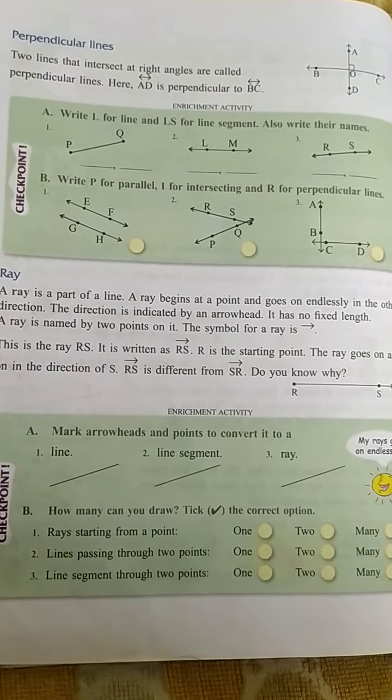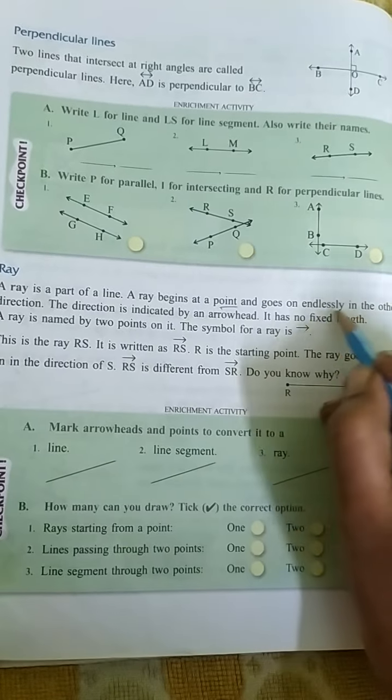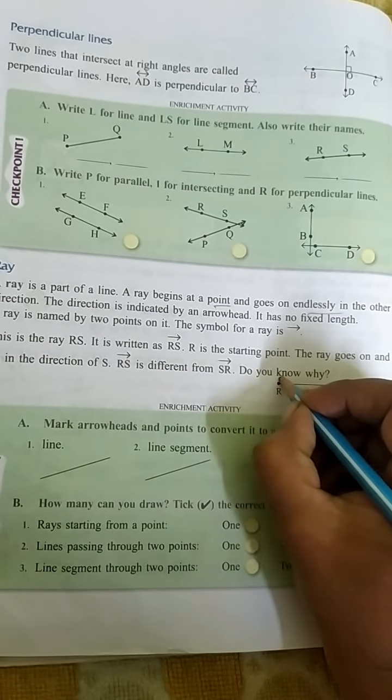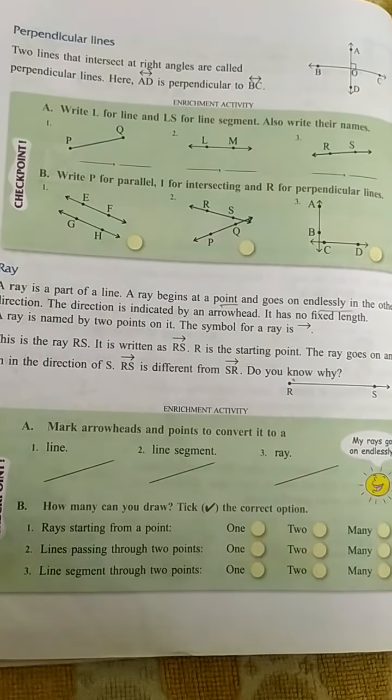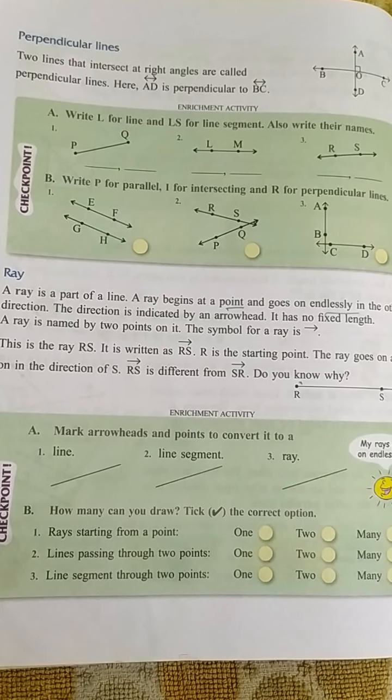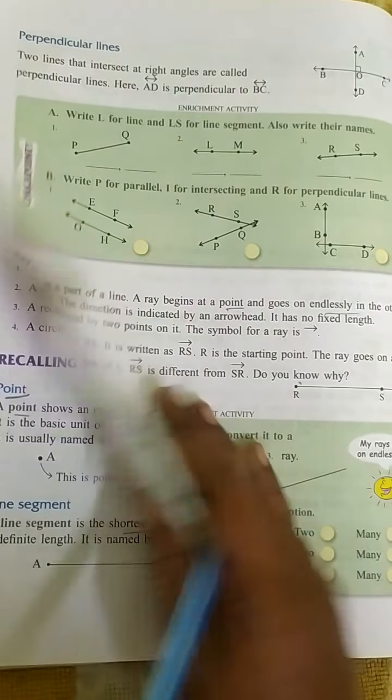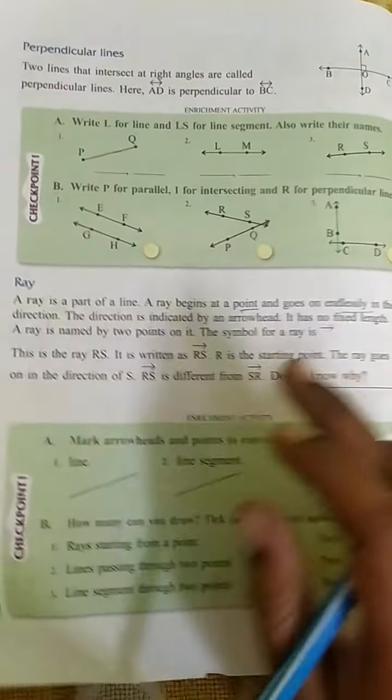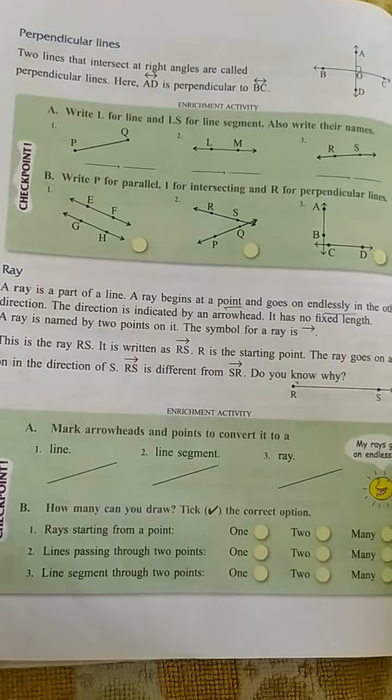Next, a ray. A ray is a part of a line. It begins at a point and goes endlessly. So it starts at a point and goes endlessly. This is the difference between the line and the ray. The line goes endless on both sides. A ray has a starting point on one side and goes endless on the other side only.